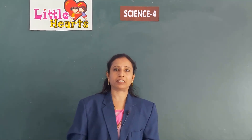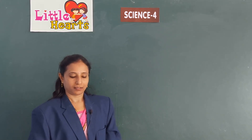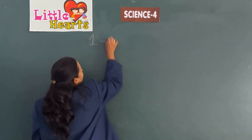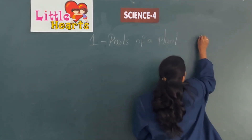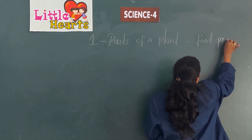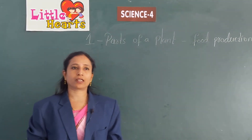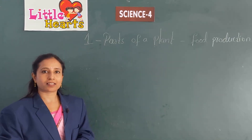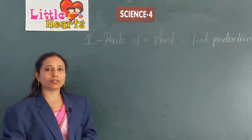Good morning everyone. I am Devi from Little Hearts Publications. Today I am going to deal with fourth class science, topic: Parts of a Plant - Food Production. In today's class we are going to discuss what are the parts of a flowering plant, what are the functions of a root, what does a shoot system consist of, and also how leaves prepare their food.